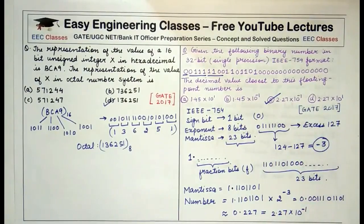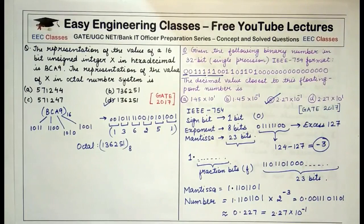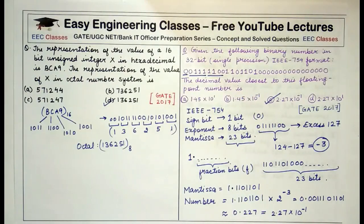These were three questions based on digital logic concepts — boolean algebra, number system conversion, and IEEE 754 floating point. They are straightforward to solve once you know the rules, allowing you to quickly gain marks. If you found this helpful, please like, share, and subscribe to Easy Engineering Classes for GATE, UGC NET, and Bank IT Officer exam preparation.